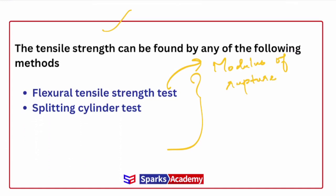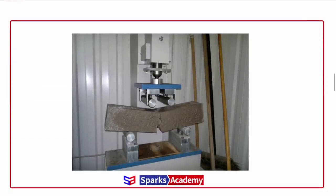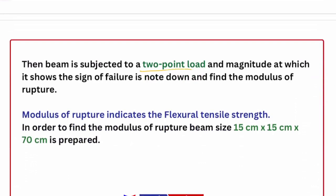This is how you perform the flexural tensile test. One specimen is loaded, and importantly it is a two-point load. This two-point load creates tensile stress. With two loads applied, tensile stress is created, and the fracture occurs at the middle point. Note that this is the total strength contribution. The beam is subjected to two-point loads, and the magnitude at which it shows signs of failure is noted to find the modulus of rupture. This indicates the flexural tensile strength. The mold size used is 15 cm × 15 cm × 70 cm — very important MCQ, they may ask you this.